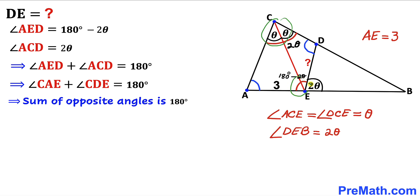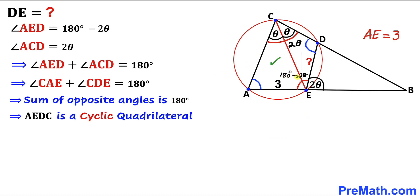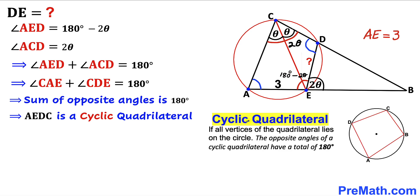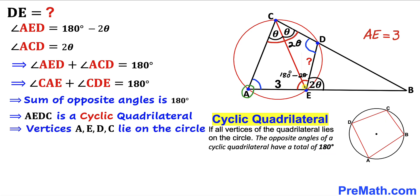So this pair of opposite angles sums to 180 degrees, and likewise the other pair also sums to 180 degrees. Therefore we conclude that AEDC is a cyclic quadrilateral, by the definition that all vertices of a quadrilateral lie on the same circle. The opposite angles of a cyclic quadrilateral have a total of 180 degrees, confirming that all vertices A, E, D, and C lie on the circle.